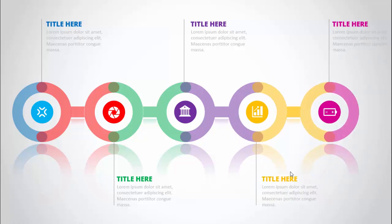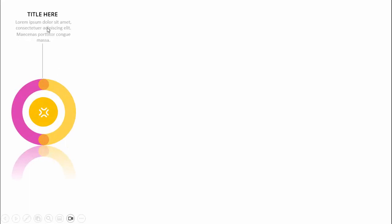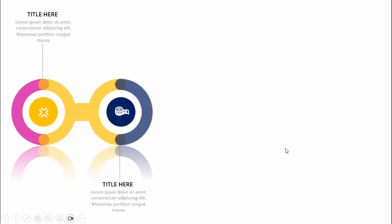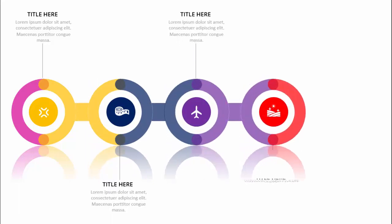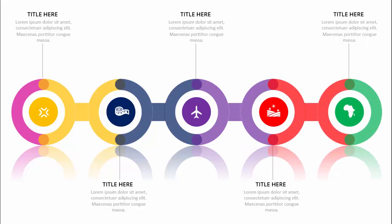I've also created one more slide without the background — only the white background — using a different color combination, with the text placed at the top of the line. When I click it will show the second, third, fourth, and fifth circles.